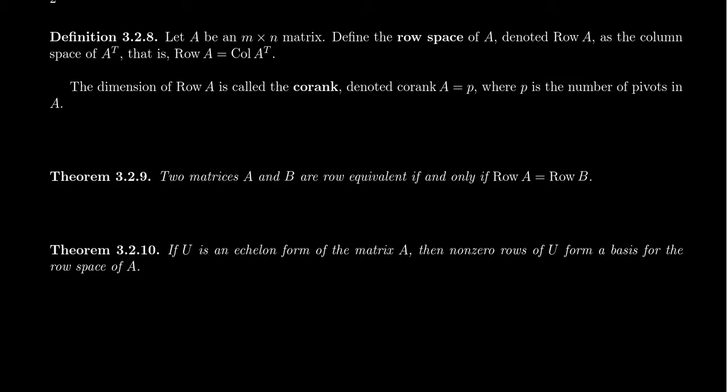Let A be an M by N matrix. Associated to every matrix are four vector spaces, which we call the four fundamental spaces of the matrix. In this series, we've introduced two of those fundamental spaces already. The first was the column space, which is the span of the column vectors of the matrix. The second was the null space, which was the solution set to the homogeneous system Ax equals zero.